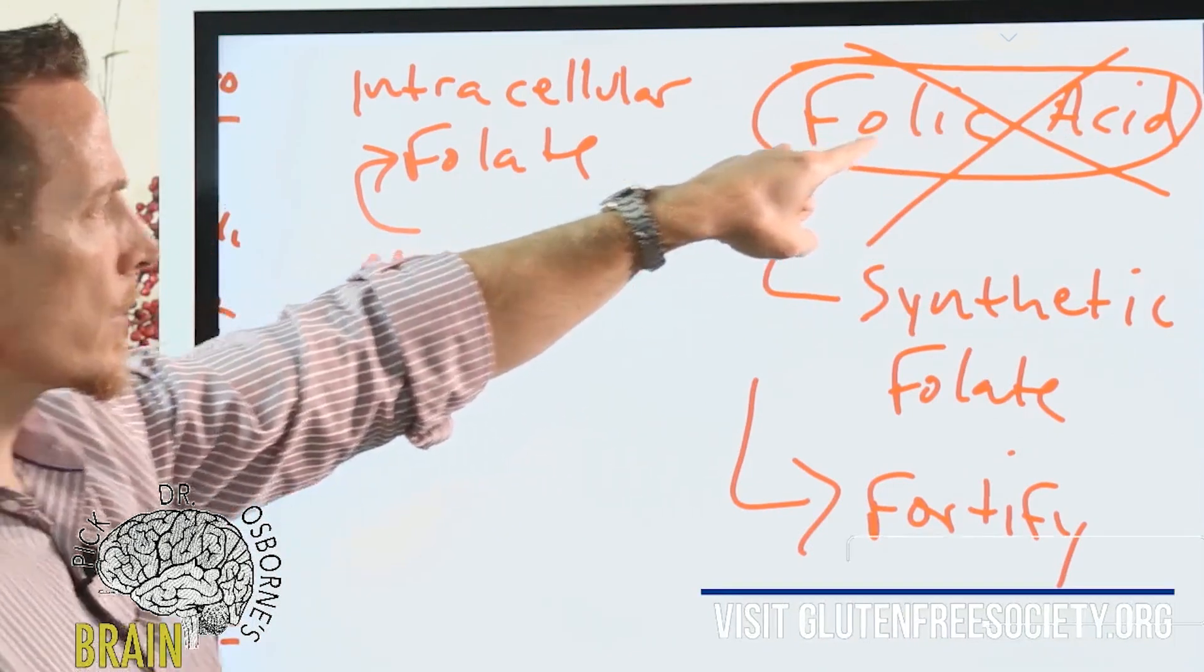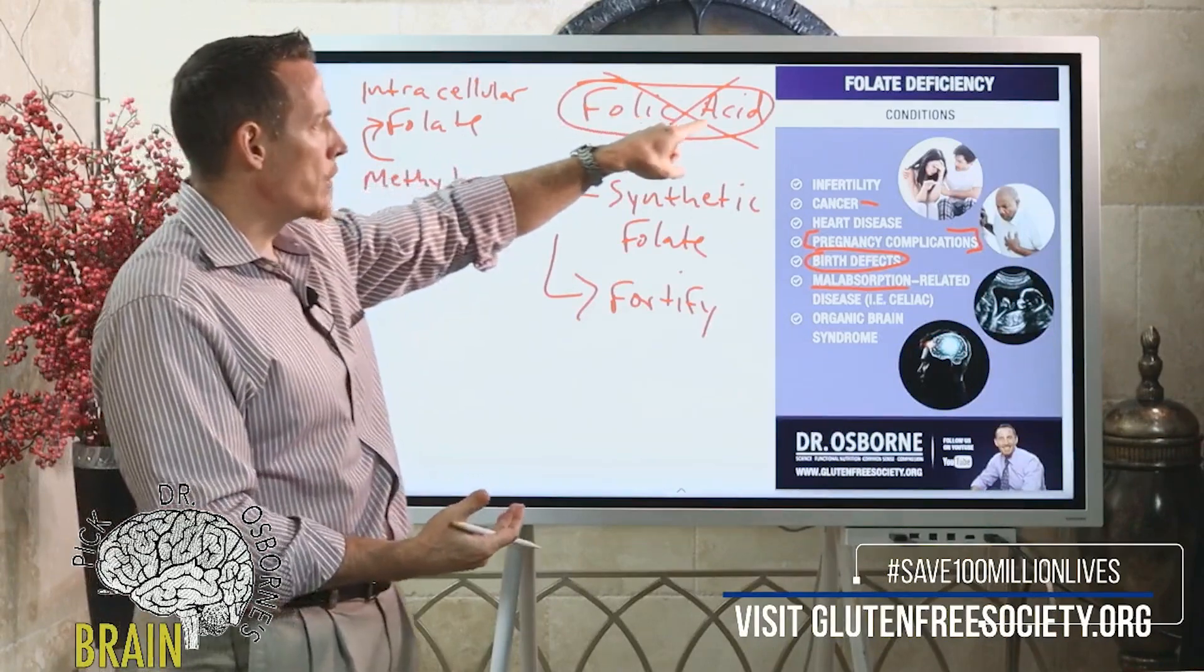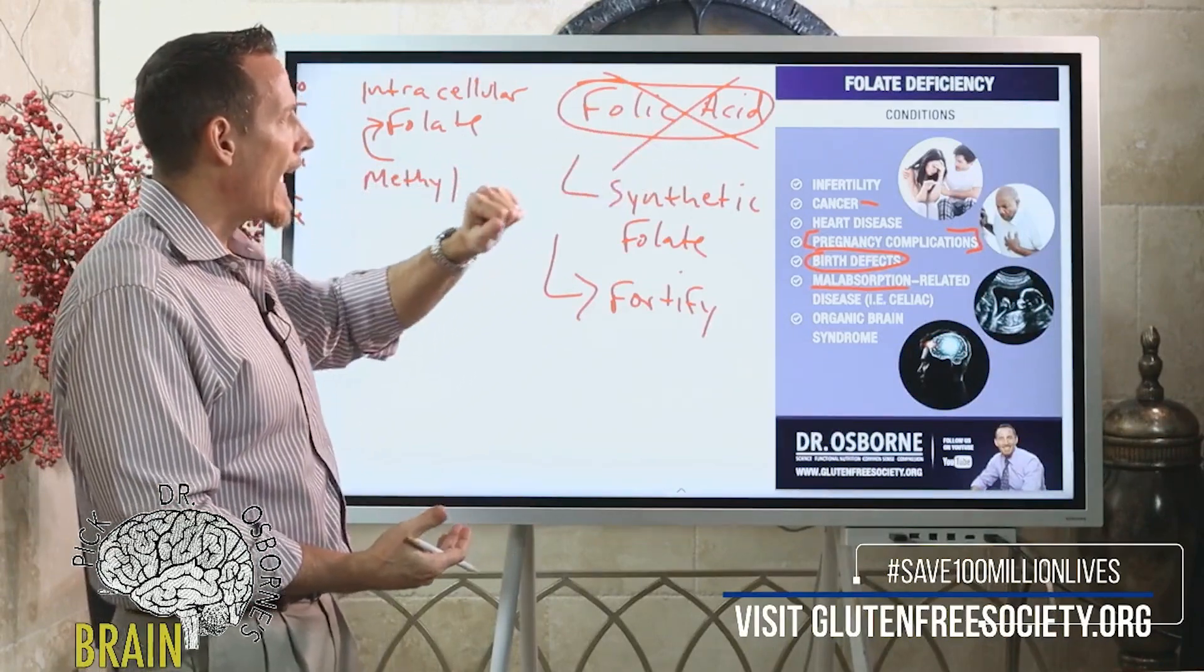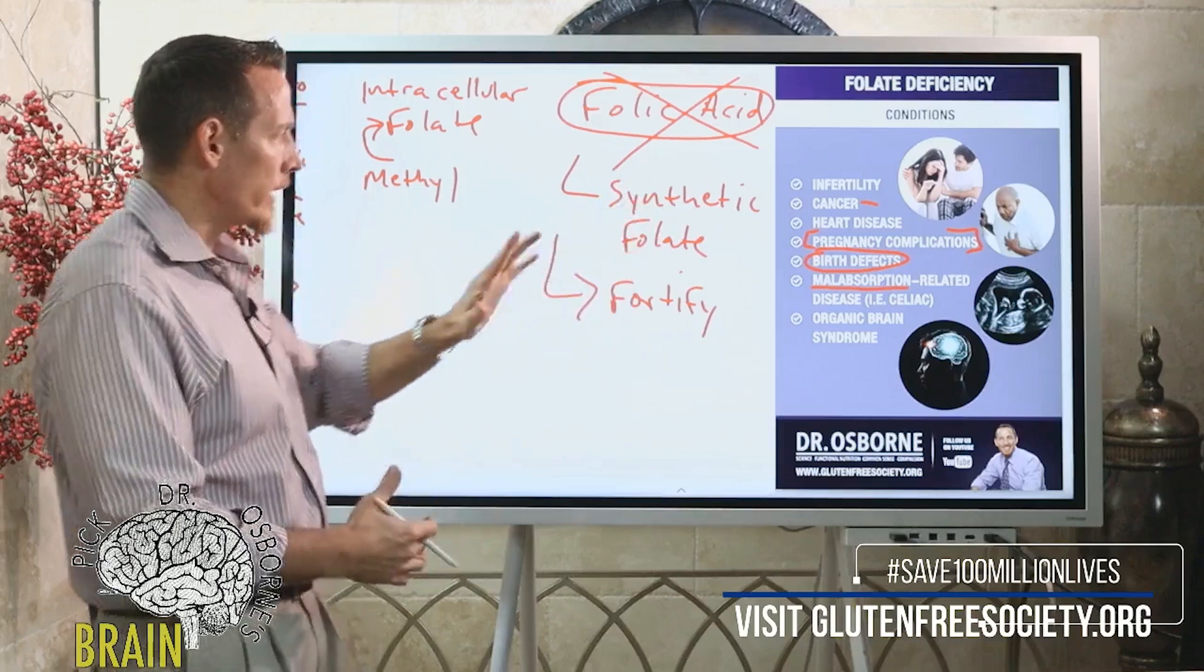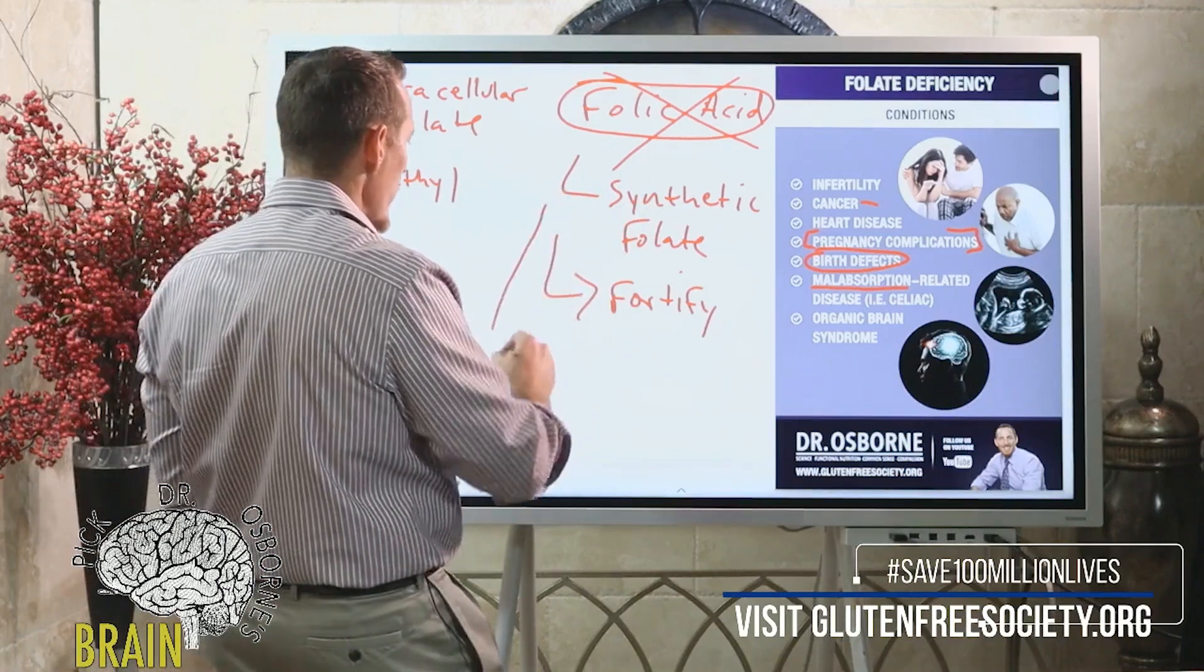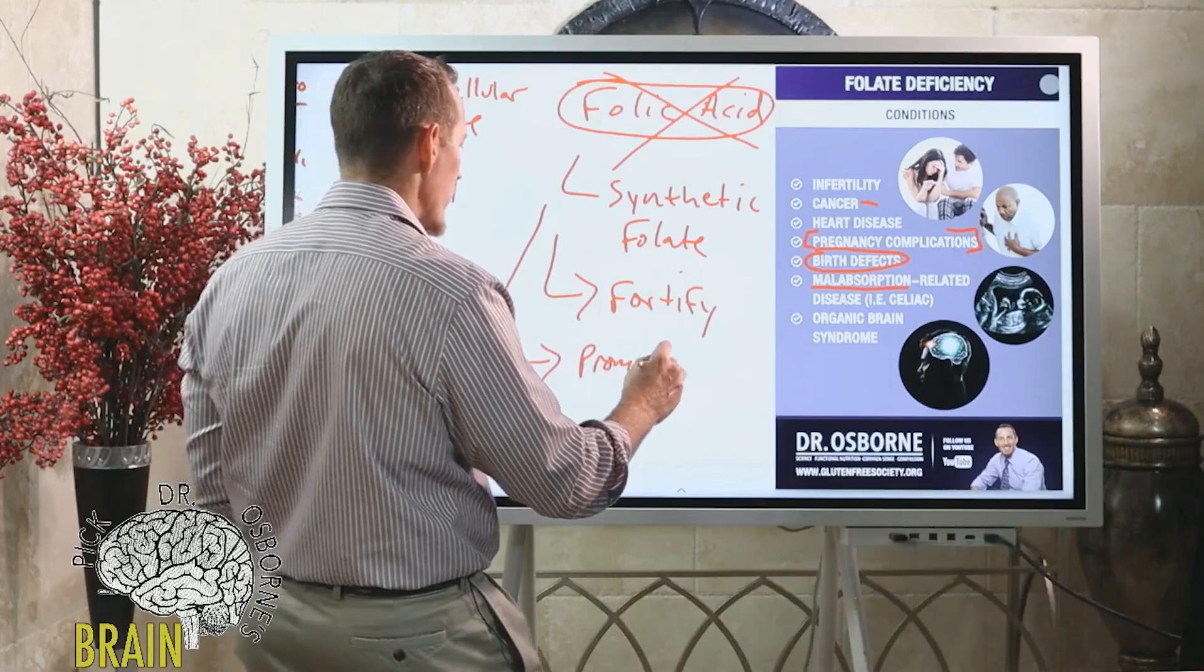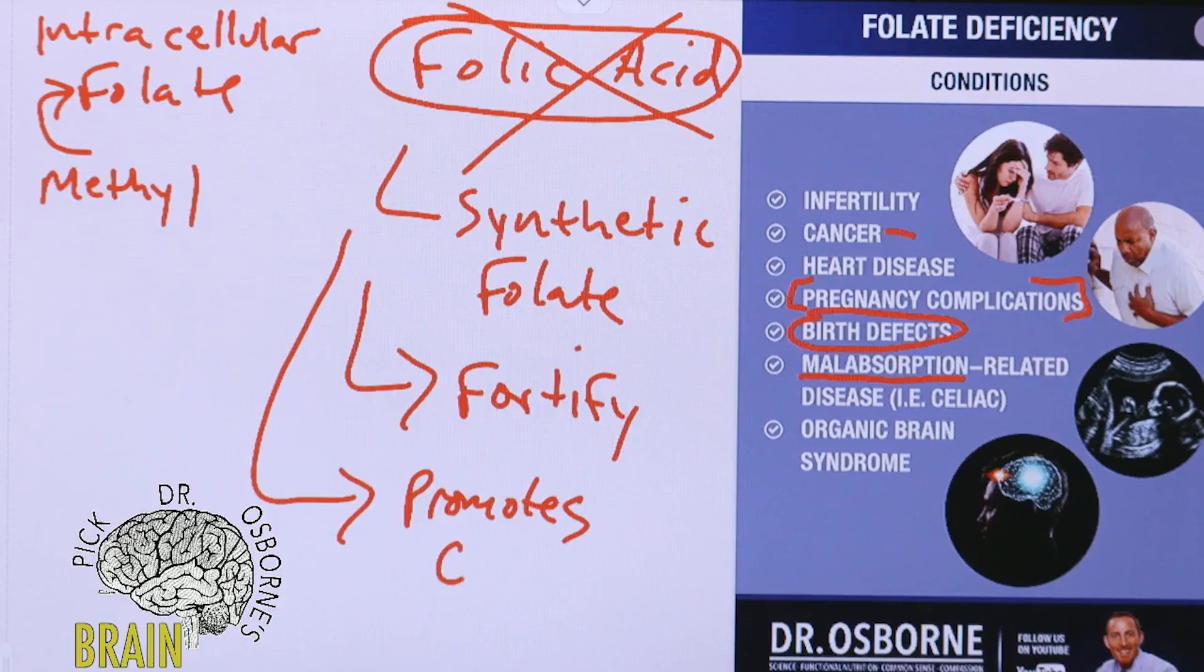When you look on a box of cereal, bread, pasta, orange juice or milk and you're seeing folic acid, this is synthetic folate. The problem with synthetic folate is some research says that it promotes certain kinds of cancers, and this is one of the things I don't recommend.